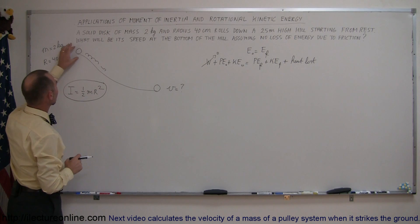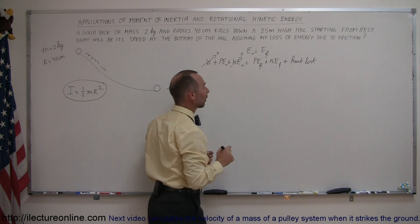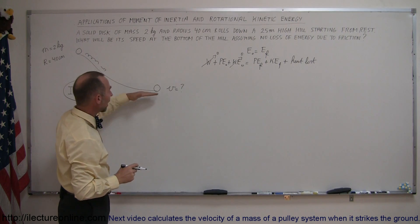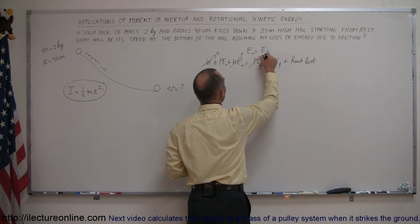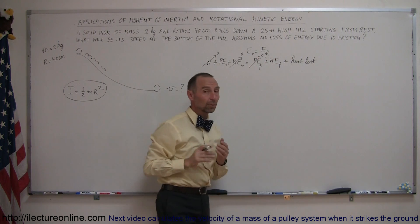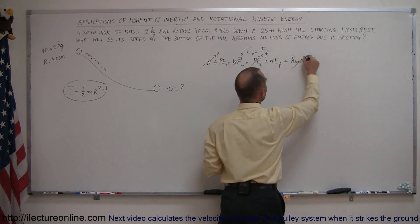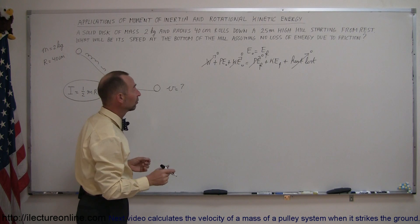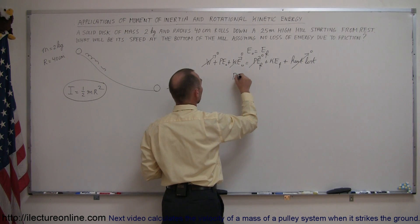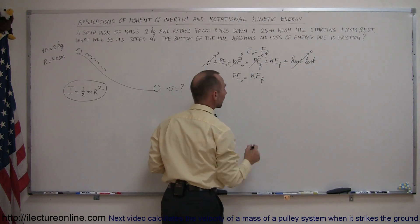Since the wheel starts from rest, it doesn't have any initial kinetic energy, so that's zero as well. When the wheel gets to the bottom of the hill, it will not have any potential energy left, so that goes to zero. And since we were told that no energy was lost due to friction, we can say that heat loss is equal to zero as well. So this problem simply becomes initial potential energy due to its height on top of the hill ends up being kinetic energy at the bottom of the hill.